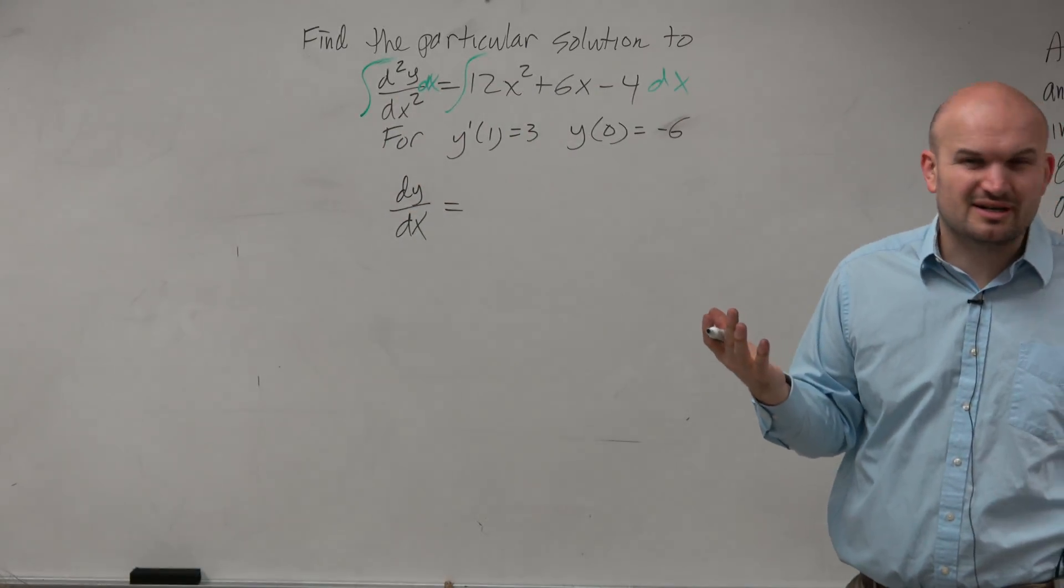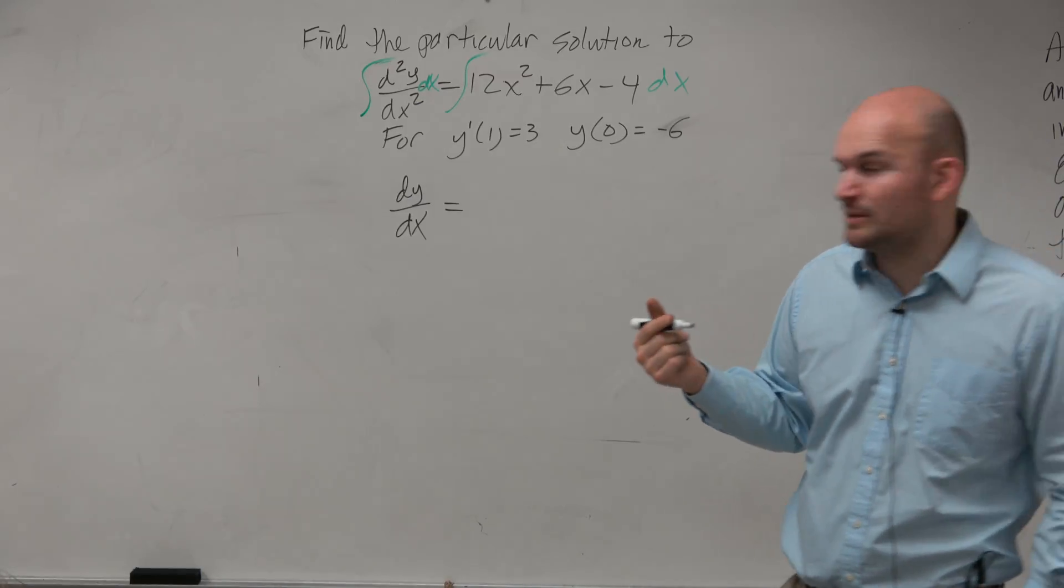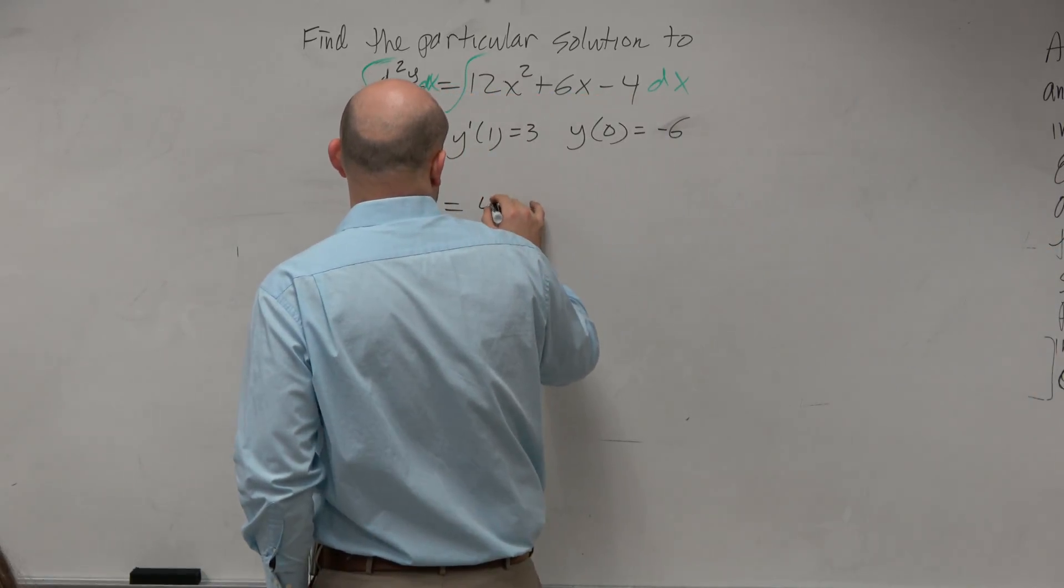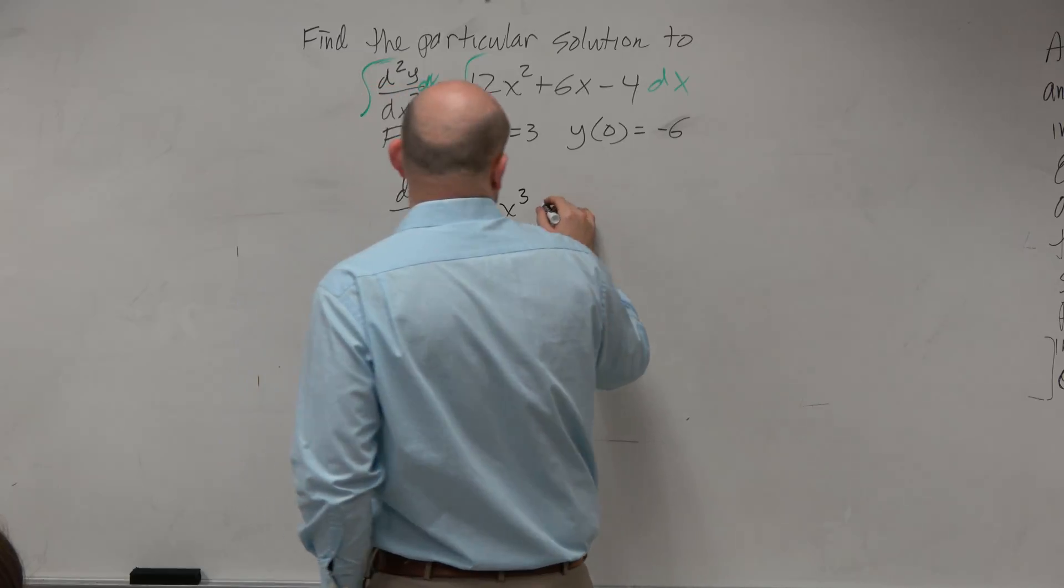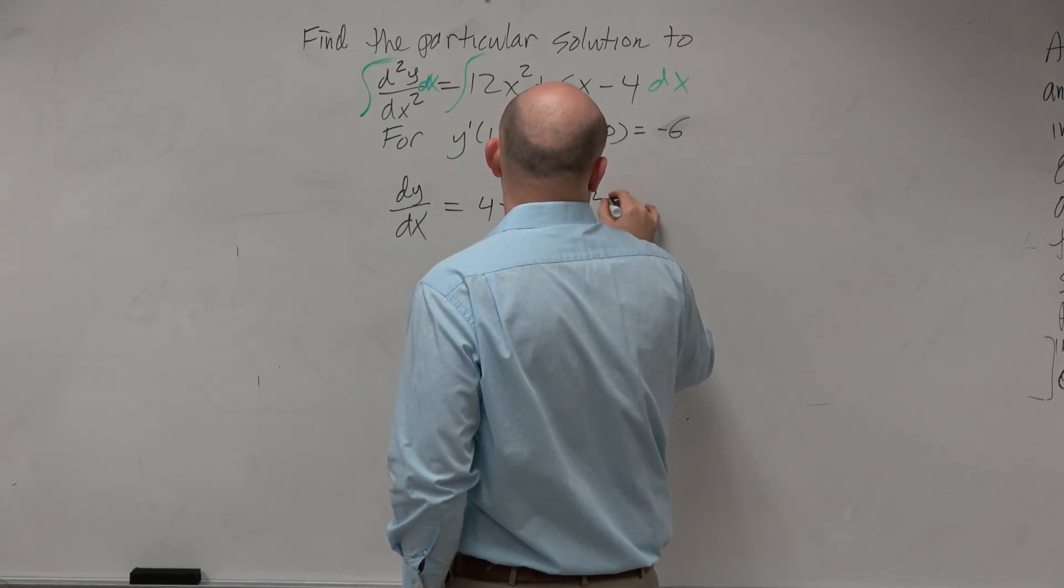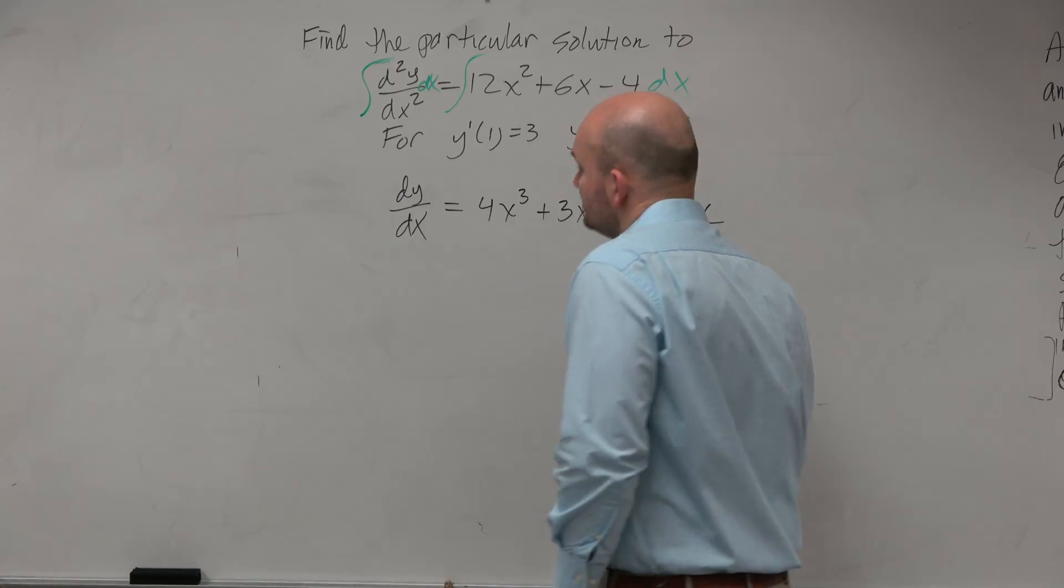I sense this is a polynomial, and we're hopefully should be kind of comfortable with polynomials. I'm going to work through this one a little bit quicker. This would be 4x³ plus 3x² minus 4x plus c.